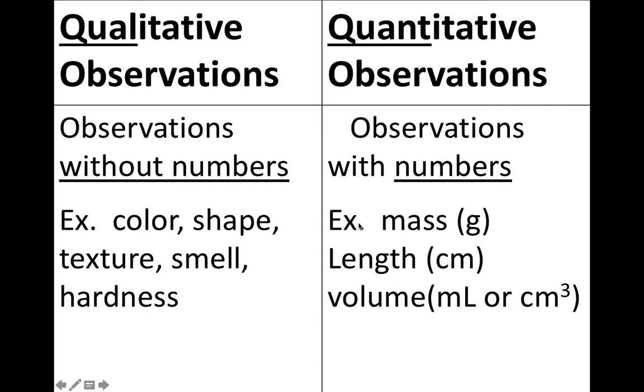Quantitative, these are things you measure with. Mass, you measure with a balance. Length, you measure with a meter stick or a ruler. Volume, you can measure with a graduated cylinder, or by multiplying length times width times height. Those would give you measurements.